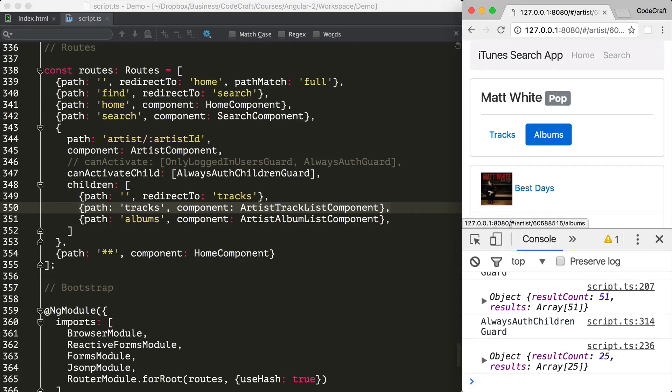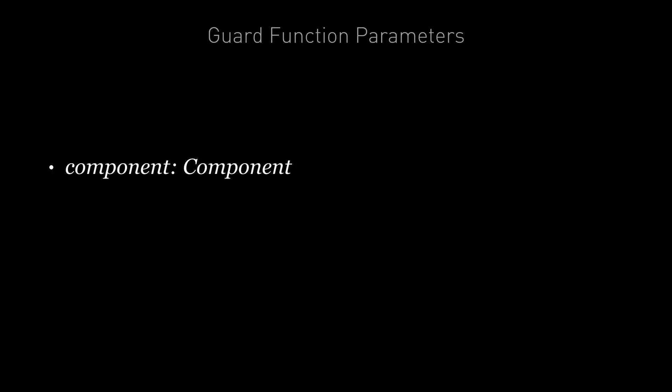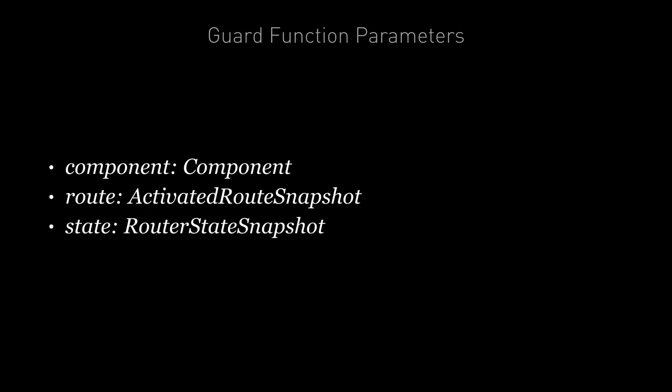To help determine whether a guard should accept or deny access, the guard function can also be passed a couple of different arguments. We can pass an instance of the component that is going to be injected into the page. We can pass an ActivatedRouteSnapshot — this is the future route that will be activated if the guard passes, and we can use its params property to extract route parameters. And we can also pass an instance of the RouterStateSnapshot — this is the future router state if the guard passes, and from this we can find the URL we are trying to navigate to via the URL property.